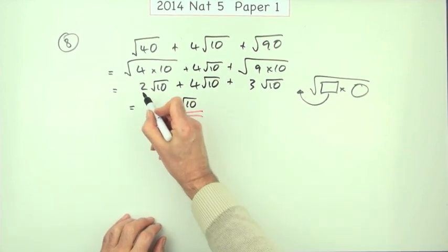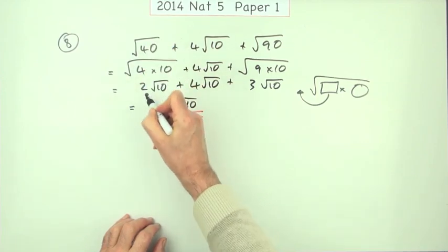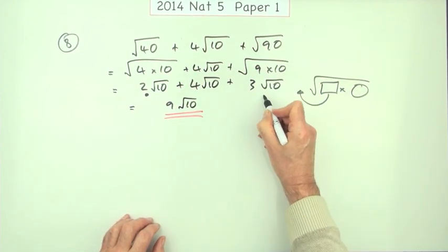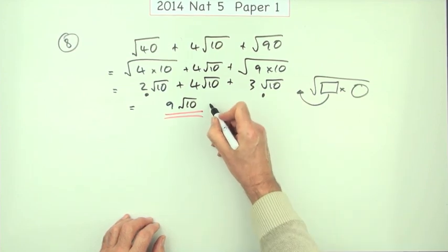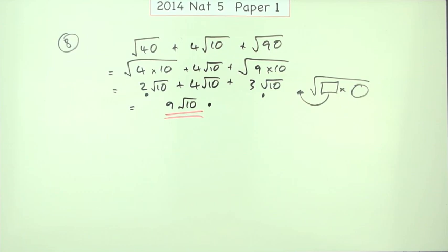And the marks were simply one for simplifying that one down to 2 root 10, one for simplifying that down to 3 root 10, and then the final mark for adding the three parts together.